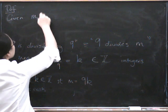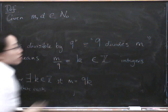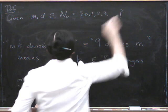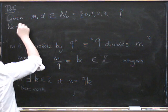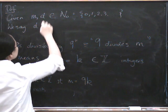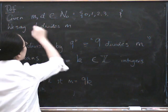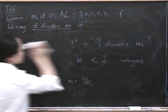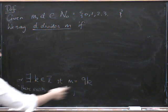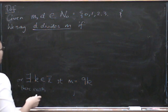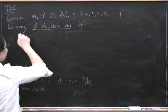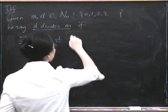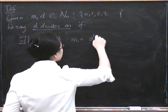Given M and D in the natural numbers including 0, so remember this is the set of numbers 0, 1, 2, 3 and so on. We say that D divides M precisely when, well let's get rid of the irrelevant part of this, we just write this down where 9 is now being replaced by our general term D. So if there exists K in the integers such that M equals D times K.